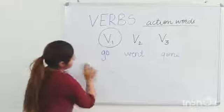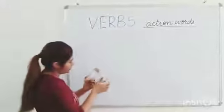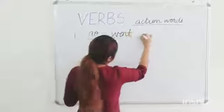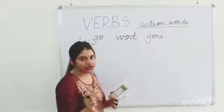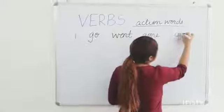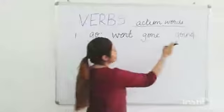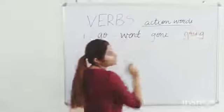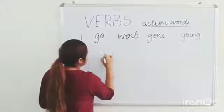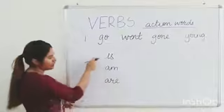Now let's start making sentences. The verb for the day is go, went, gone, and there is also the ING verb form that we make by adding ING to V1, so it becomes going. We will take helping verbs is, am, and are. We will be making sentences on all of these.